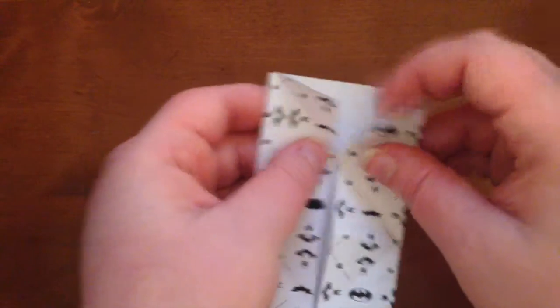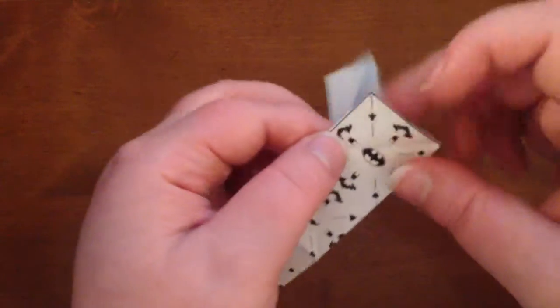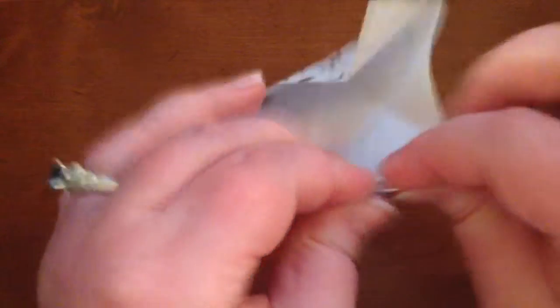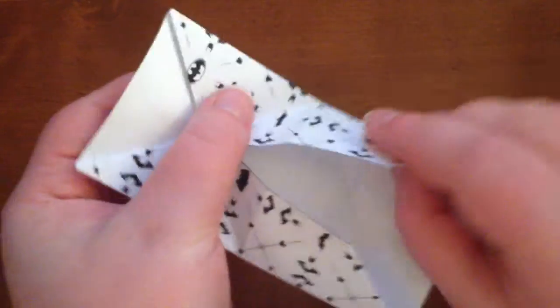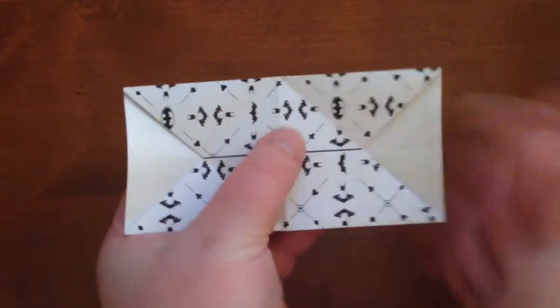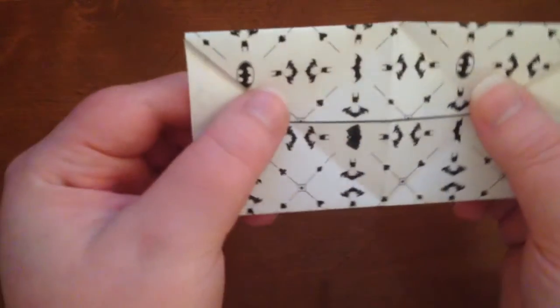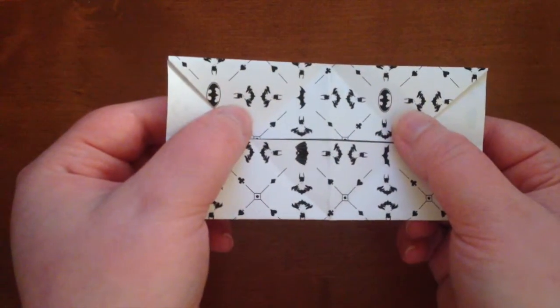Just like that. Now I'll do the same thing on this end. Folding it in, making a nice little V. Sorry Batman, you're going to hide. And there you go. Now, the only tricky part, not too tricky.